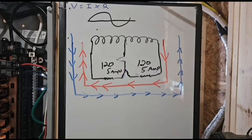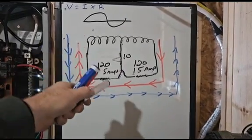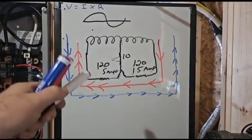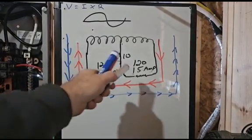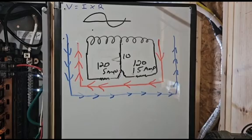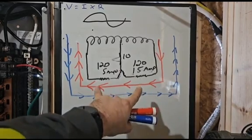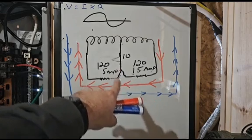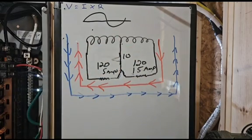But if it is uneven, the neutral, by accepting the extra or providing the extra, allows us to maintain the balance of 120 and 120. The loads are no longer in series on the full 240. The balanced section of them is in series on the full 240, but the imbalance goes back on the neutral.